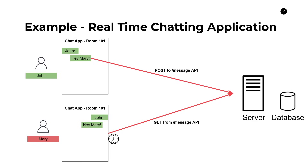REST or HTTP APIs follow what's called the request-response model. That means the client — John or Mary's application in this case — needs to make a request to the server to ask for information. The server can delay its response or respond right away, but in this model the server cannot be the one that initiates that conversation. It cannot push messages into the client or broadcast them out to the client. And that's where WebSockets comes in.